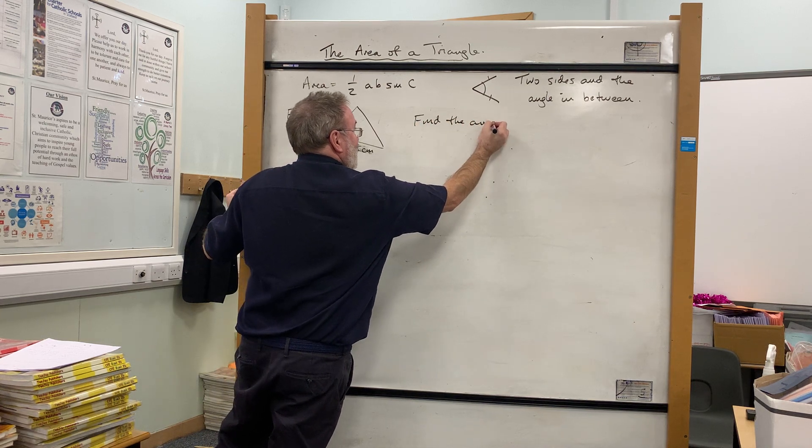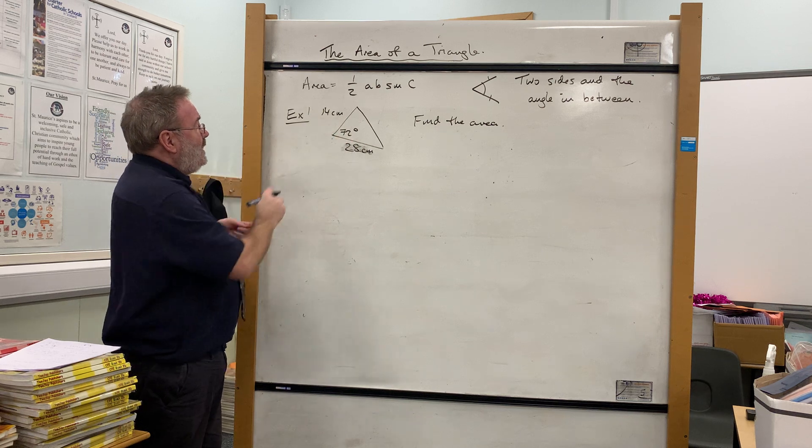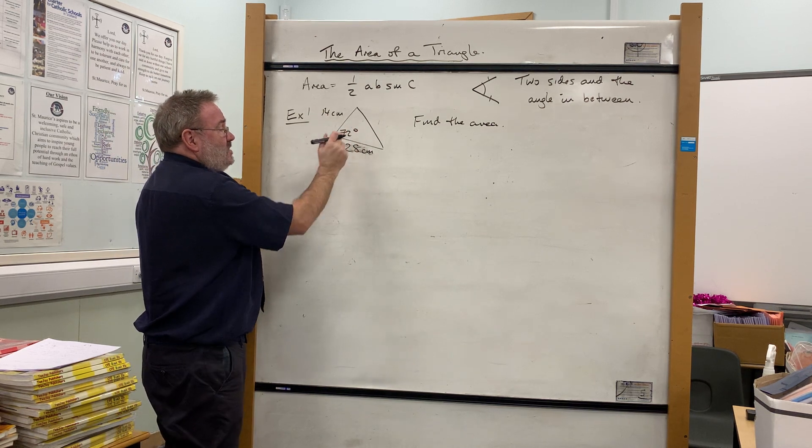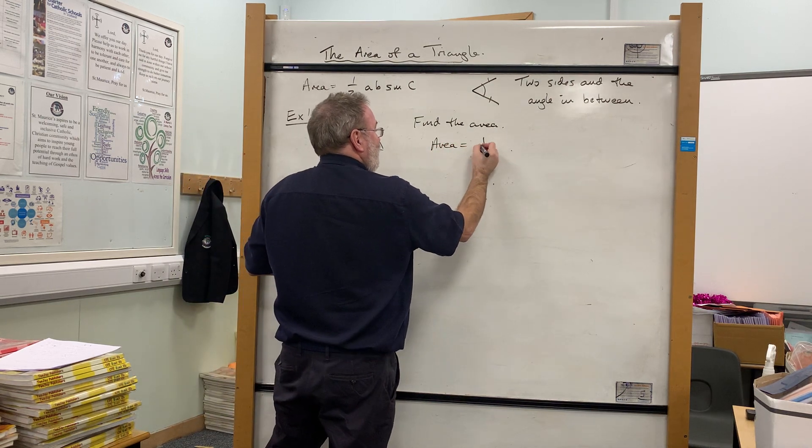So the first thing we're going to do here is find the area of this triangle. Now there's your information and that's what you have: you've got 14 centimeters, you've got 28 centimeters, you've got 72 degrees.